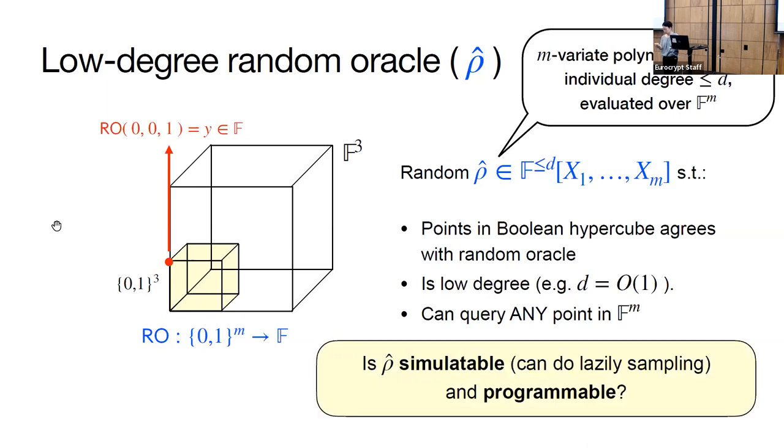What other properties do we want of the low-degree oracle? As a comparison, the standard random oracle has two nice properties when we do security analyses. It's simulatable, and it's possible to program it. A natural question is whether our oracle also satisfies these properties. For this talk, I'll discuss how simulation works. Our oracle satisfies both. I'll discuss how simulation works, and programmability uses many of the same ideas.